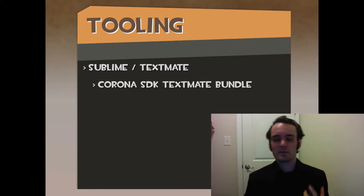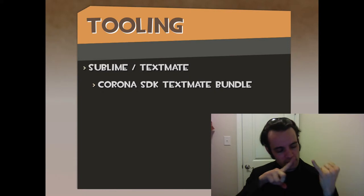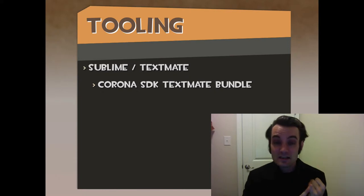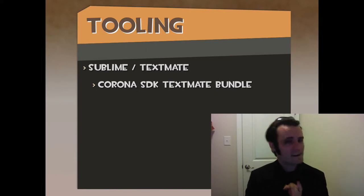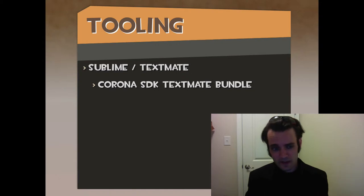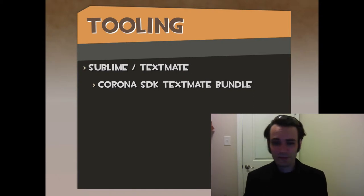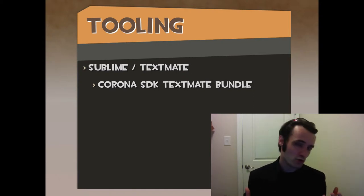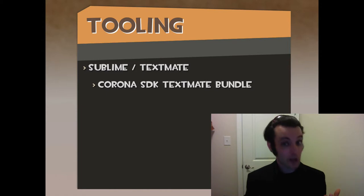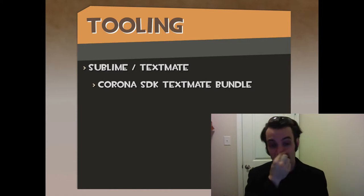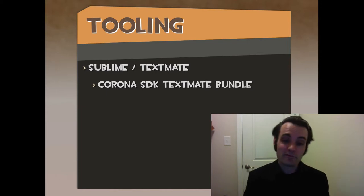The Corona SDK TextMate Bundle specifically is what I'm referring to — it gives you IntelliSense, some form of code coloring, and some form of code hinting. It's a dynamic language, very hard to introspect, no common OOP mechanism, so it's pretty good considering. It's nice to have and helps a lot with productivity.